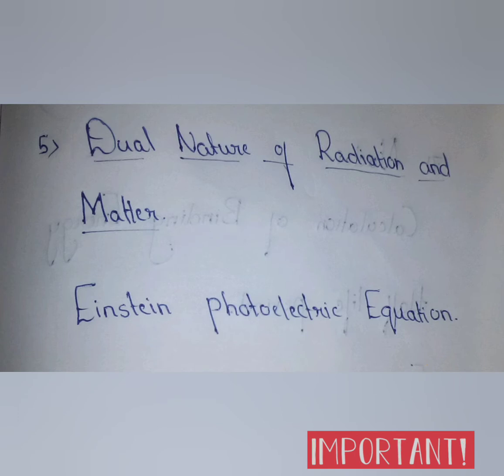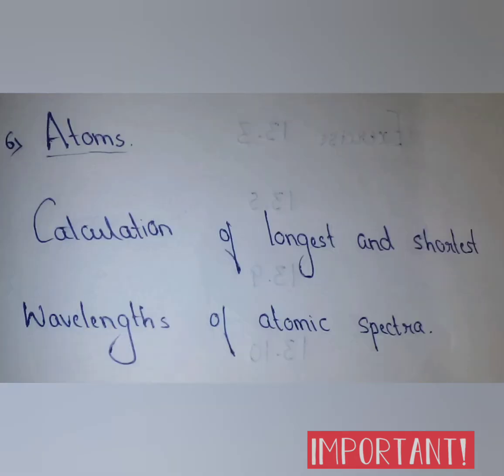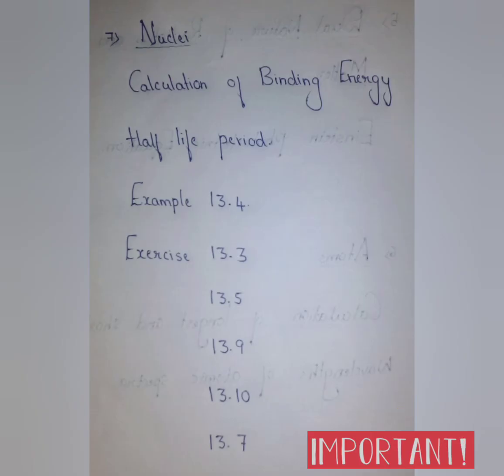From the fifth chapter, Dual Nature of Radiation and Matter, problems based on Einstein's photoelectric equation will be asked for your exams. From the sixth chapter, Atoms, problems based on calculation of the longest and shortest wavelengths of atomic spectra will be asked.